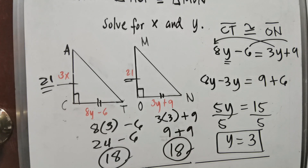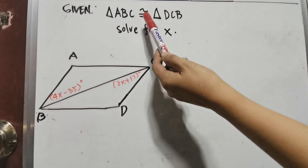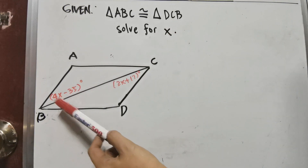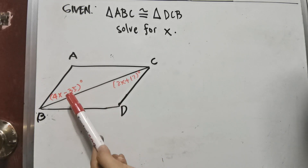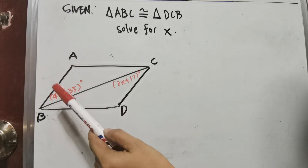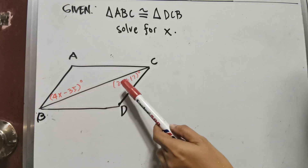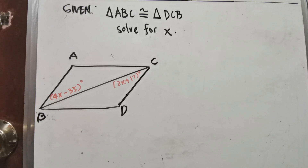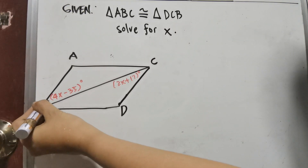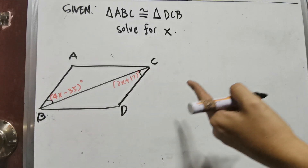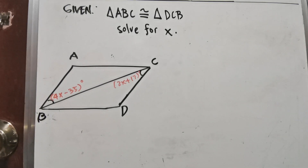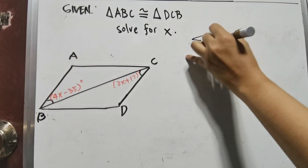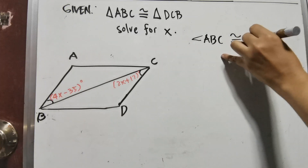We have triangle ABC is congruent to triangle DCB. This time, we will solve for the value of X to find the unknown angle. We know these angles are congruent — angle ABC is congruent to angle DCB. Since the triangle has reflexive sides, we name the angle using 3 capital letters.